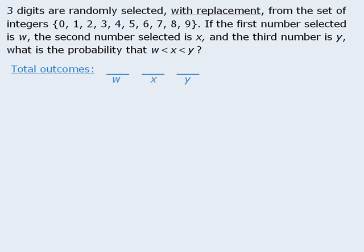When it comes to selecting the first number there are ten ways to accomplish this stage since there are ten numbers from which to choose. Next, since we are replacing the numbers after each selection there are still ten ways to select the second number and ten ways to select the third number.